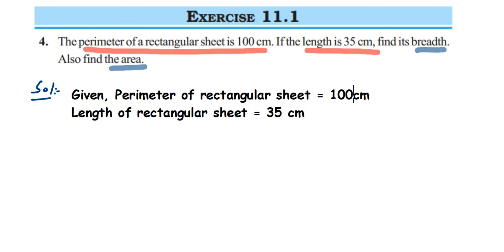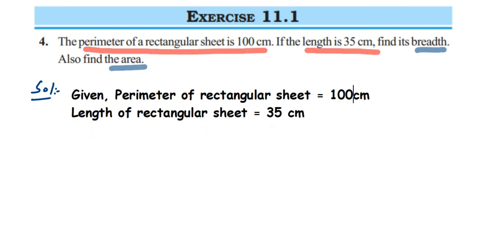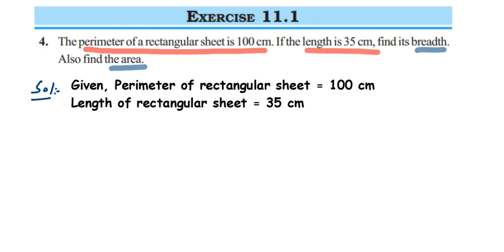We have to use the perimeter formula because from length alone we cannot find out the breadth. So we use the perimeter formula to find the breadth. The perimeter of a rectangle is equal to 2 into (l + b). This is the formula. The perimeter is given, which is 100 centimeters, equal to 2 into (35 + b).